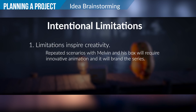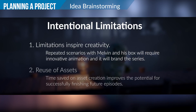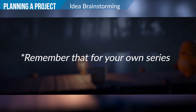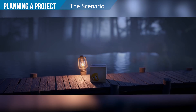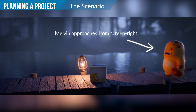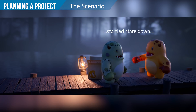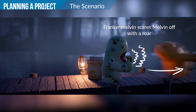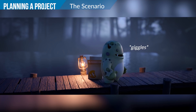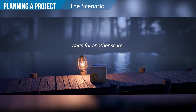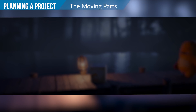Number one, limitations inspire creativity. And number two, this recurring format enables us to reuse assets like the Melvin and box rigs, and recycling assets is of course efficient. So if you dream of creating an animated web series, keep those things in mind. For our particular series, the winning scenario was that Melvin would approach the box only to be surprised by a Frankenstein version of himself jumping out. They stare at each other for a moment, then Frank-Melvin roars at regular Melvin to scare him away, then giggles to himself and jumps back in the box to wait for another poor soul to scare.